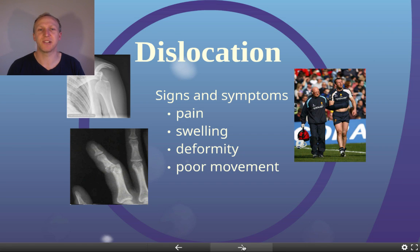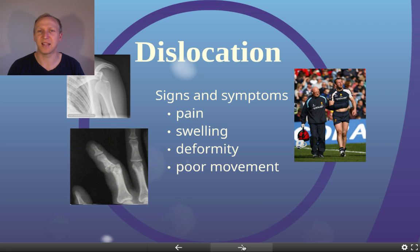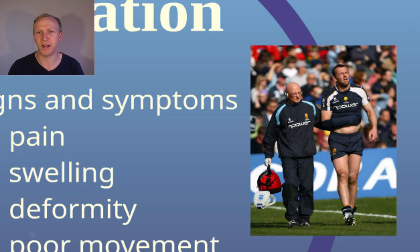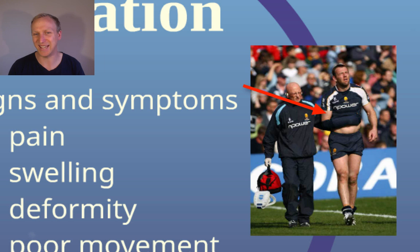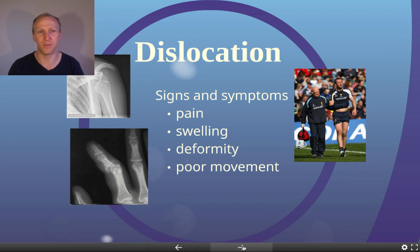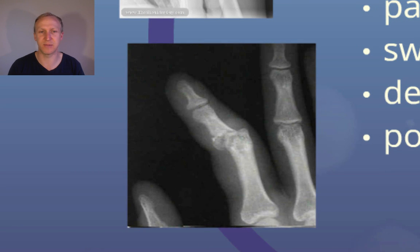The other type of hard tissue injury is dislocations. Signs and symptoms are similar: pain, swelling, deformity, and poor movement. As shown in the image of the rugby player, a dislocated shoulder is quite clear. People who dislocate a shoulder will often automatically put their arm across their body for support, or leave the arm hanging, because the joint is dislocated and they don't want to move it.